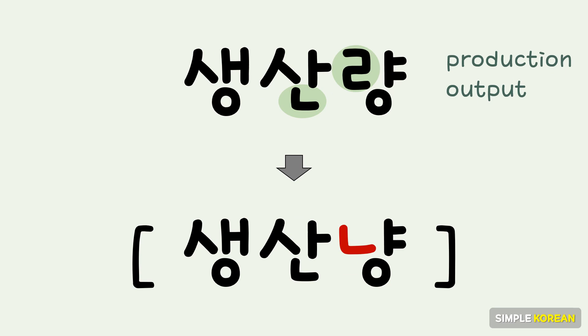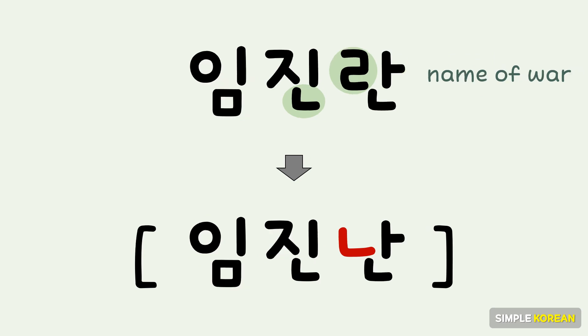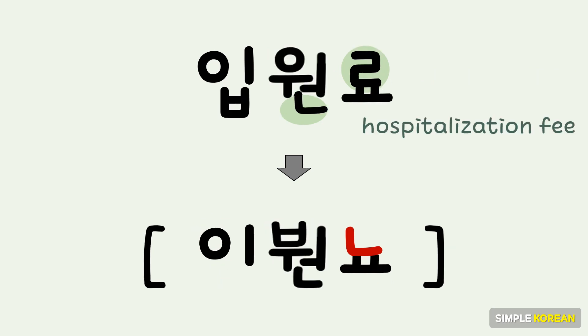Additional examples: 생산냥, 횡단로, 임진란, 입원료.